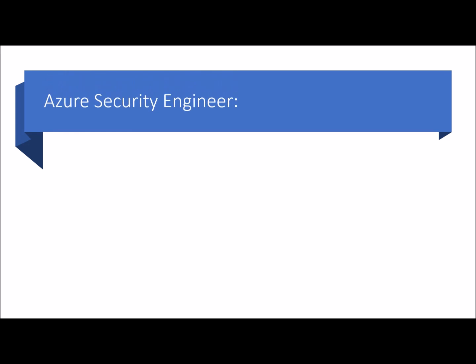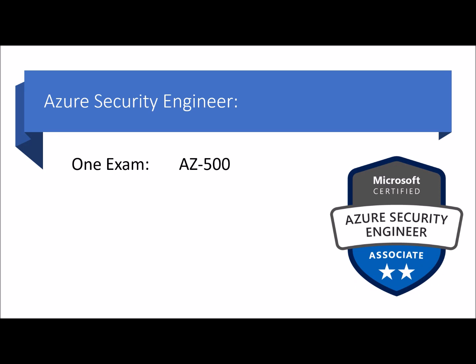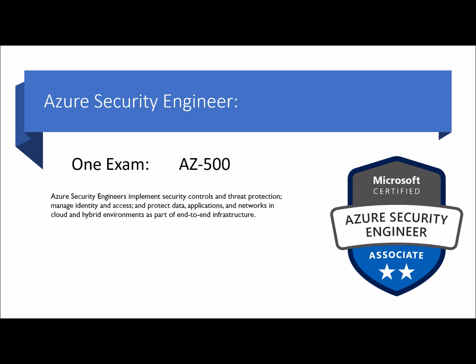The next role is Azure Security Engineer Associate, which requires one exam: AZ-500. Azure Security Engineers implement security controls and threat protection, manage identity and access, and protect data, applications, and networks in cloud and hybrid environments as part of end-to-end infrastructure. The skills measured are manage identity and access, implement platform protection, manage security operations, and secure data and applications. Candidates should have strong skills in scripting and automation, a deep understanding of networking, virtualization, cloud architecture, and strong familiarity with Azure products and services. On successful completion, you would be certified as Azure Security Engineer Associate.